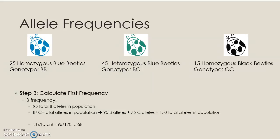We always round to the third decimal place because allele frequency changes can be very slight — it might be 0.542 one generation, then 0.558, then 0.595. Rounding to three decimal places ensures we detect fluctuations from one generation to the next. So for B in this generation: 0.558. Now we do the same for C: 75 divided by 170 equals 0.441. That's the frequency for C.